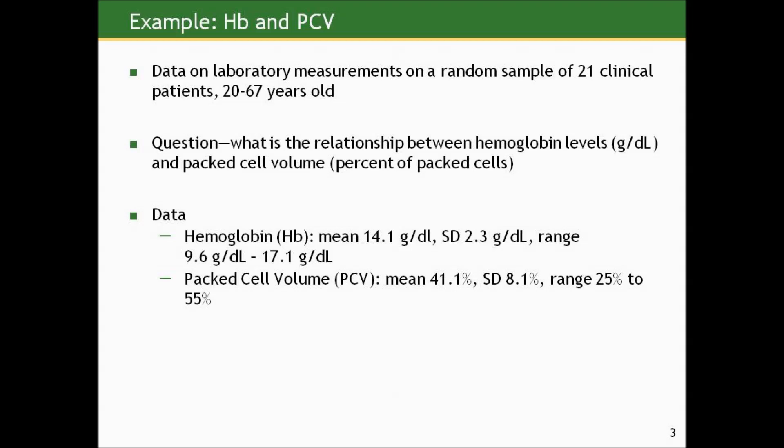Here's an example from clinical medicine relating somebody's hemoglobin levels to what's called their packed cell volume measurement. These were data on laboratory measurements on a random sample of clinic patients between the ages of 20 and 67. We actually only had 21 subjects, so it's a small sample. The researchers want to assess what is the relationship between hemoglobin levels measured in grams per deciliter and packed cell volume — the percentage from 0 to 100% that measures the percent of cells that are packed.